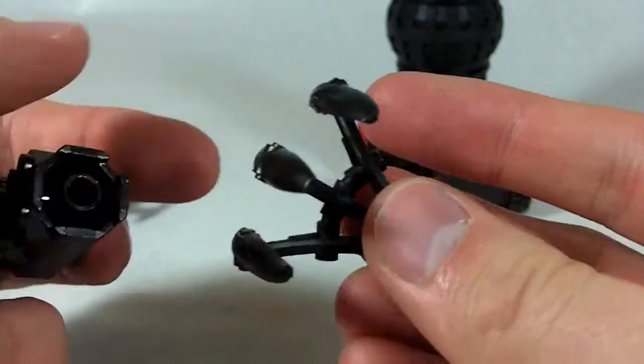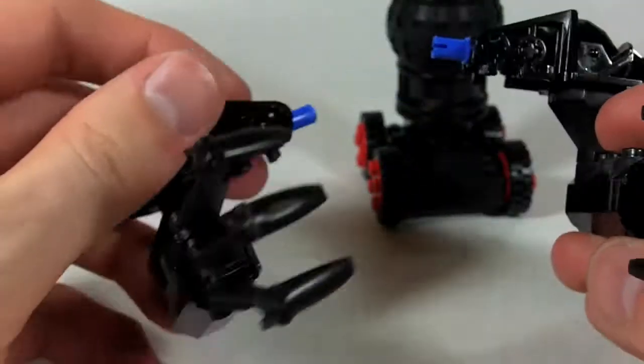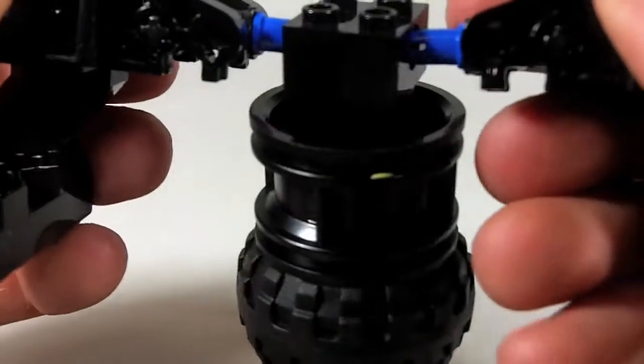Stick that in like so. And then I've got this big claw piece that becomes the arm or the hand. The other arm is the same but backwards or reversed. Stick these into the Technic holes up here.